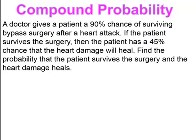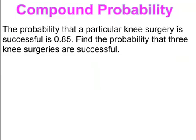Pause and try. You're given the probabilities already: a 90% chance of survival and a 45% chance of heart damage. When finding the probability of survival and heart damage heals, you multiply the two probabilities together, and you should have ended up with 0.405. Pause and try. In this case, you multiply 0.85 by itself three times and get 0.61.